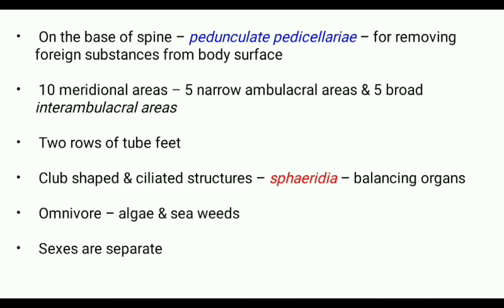The whole surface of the body consists of 10 meridional areas: 5 narrow ambulacral areas and 5 broad interambulacral areas. Each ambulacral area has 2 rows of tube feet arranged from peristome to periproct. They also contain club-shaped and ciliated structures which function as balancing organs called spheridia.